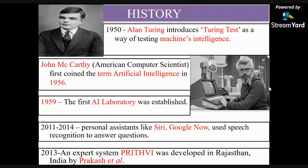As far as the history is concerned, a scientist named Alan Turing introduced a test called the Turing Test for testing machine intelligence in 1950. In 1956, the term Artificial Intelligence was coined by John McCarthy. The first AI laboratory was established in the United States by 1959, known as the MIT Artificial Intelligence Laboratory.